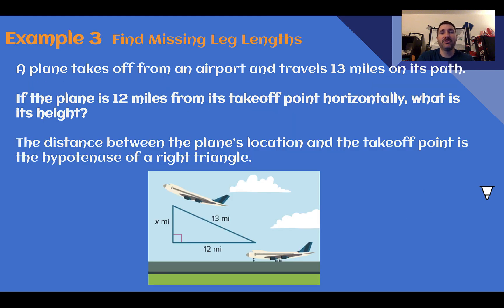Example three, find missing leg lengths. So in our previous examples, we've been finding a missing hypotenuse, where we add the two square legs together to get the square of the hypotenuse. This time we got to find the leg, so we're kind of working backwards. A plane takes off from an airport and travels 13 miles on its path. If the plane is 12 miles from its takeoff point horizontally, what is its height? So the distance between the plane's location and takeoff point is the hypotenuse. They went 13 miles on the path. And it says horizontally it is 12 miles away from where it started. We want to know the height, which in this case is one of the legs.